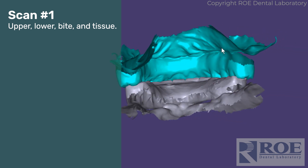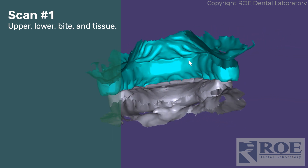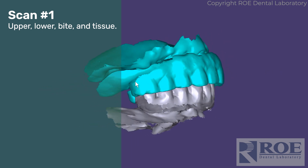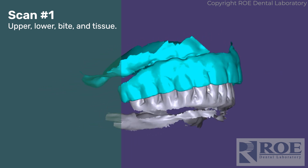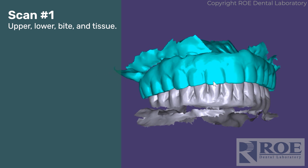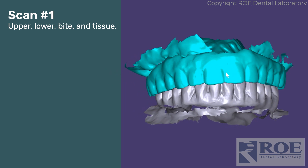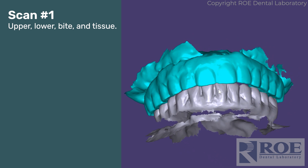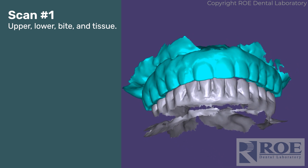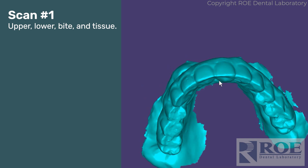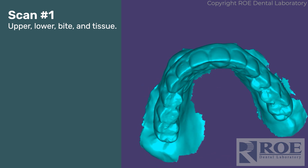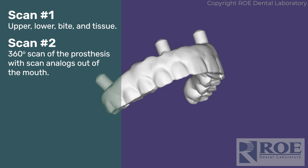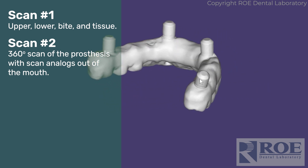Scan the upper, lower, and bite, and grab some tissue so you have as much of the prosthesis as possible. There may be some missing areas — that's okay because we're going to scan the prosthesis out of the mouth. Scan as much as you can, then if your scanner allows, turn off the opposing and scan the prosthesis 360 degrees outside the mouth.